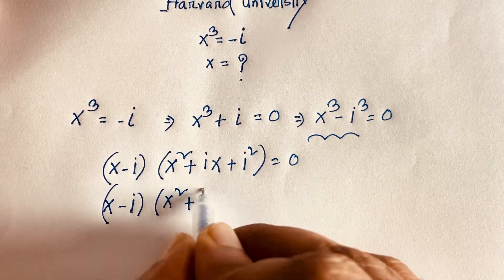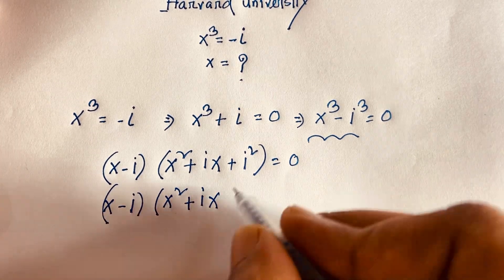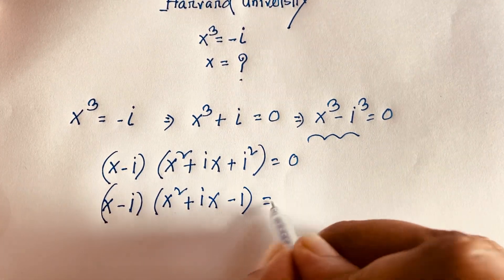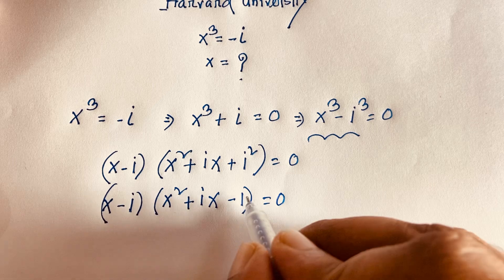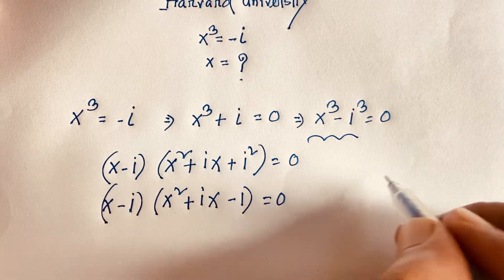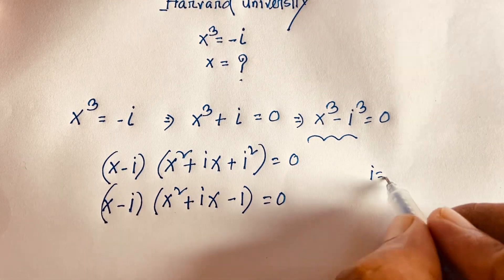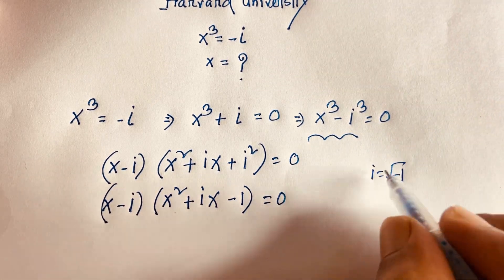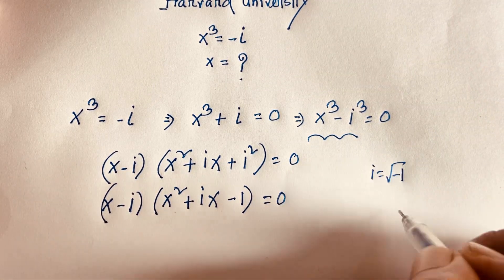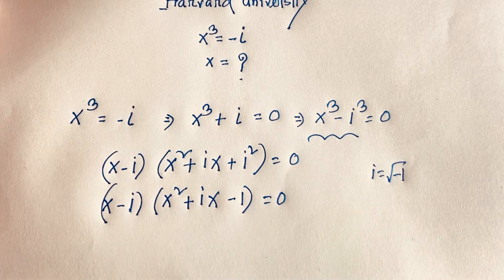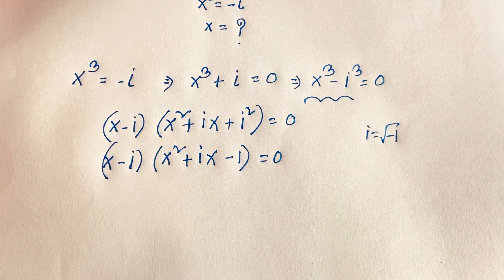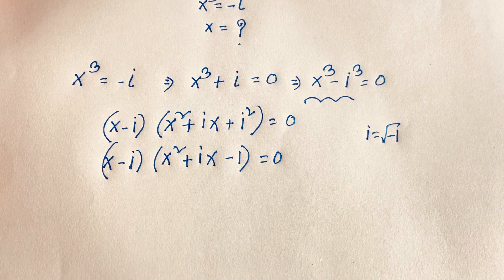So it is (x minus i)(x squared plus ix minus 1) is equal to 0. We know that i squared equals negative 1, because i is equal to the square root of negative 1, so i squared equals negative 1.